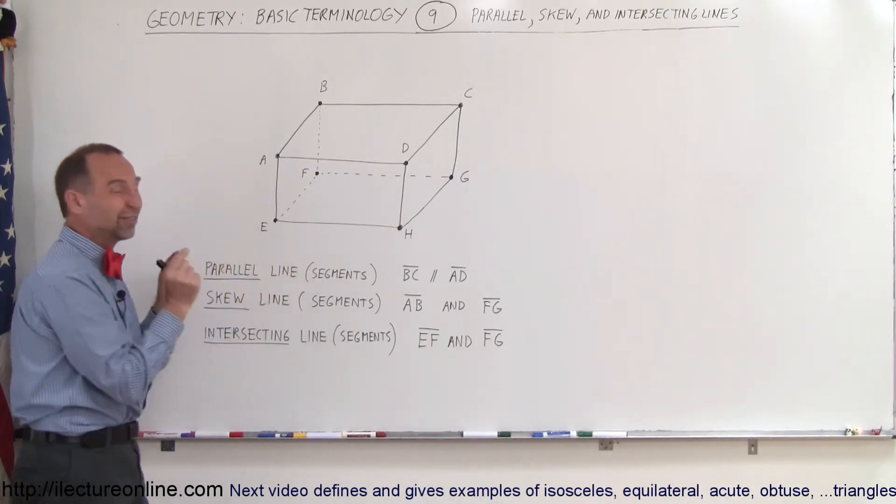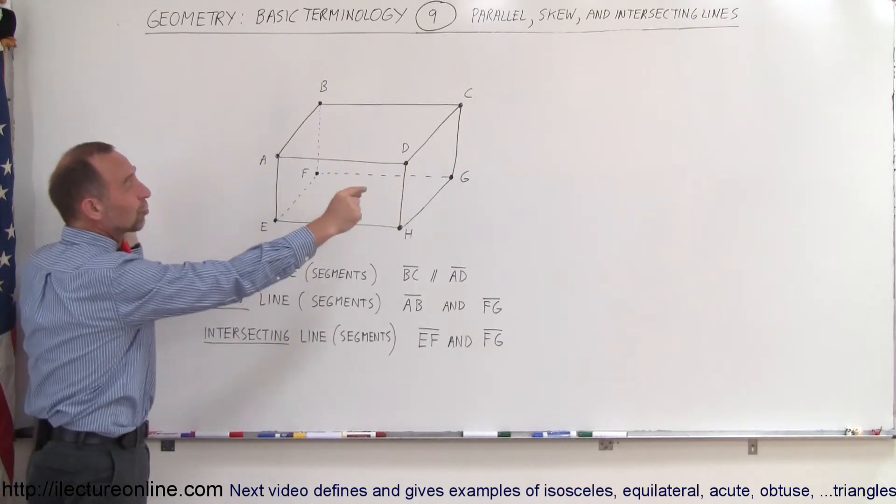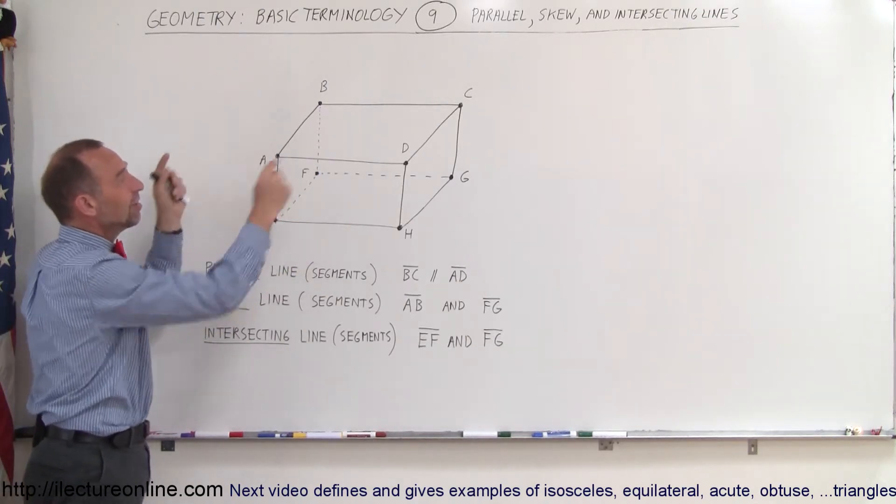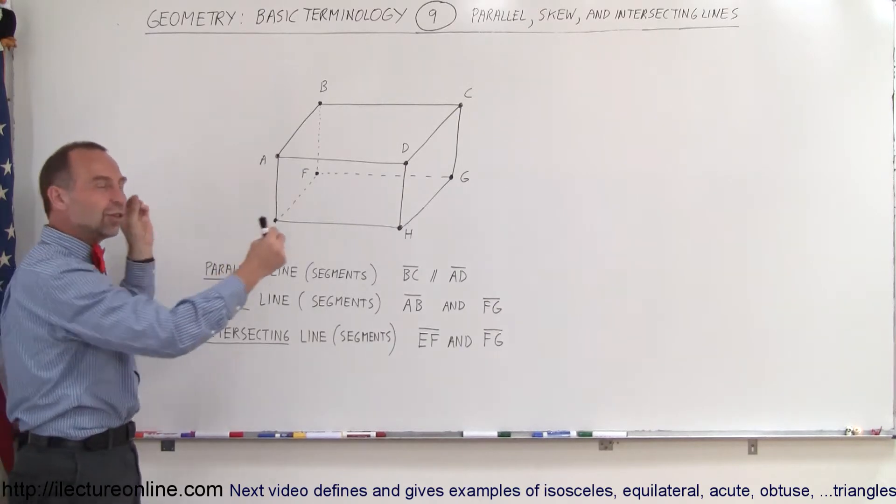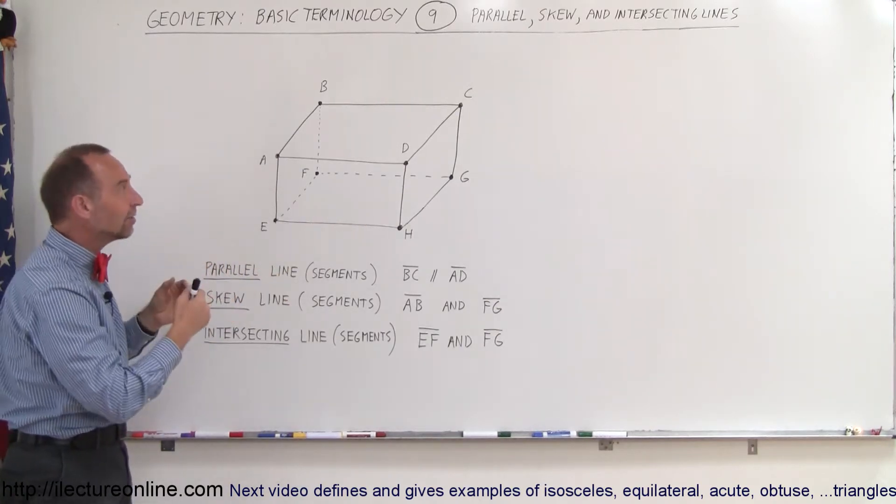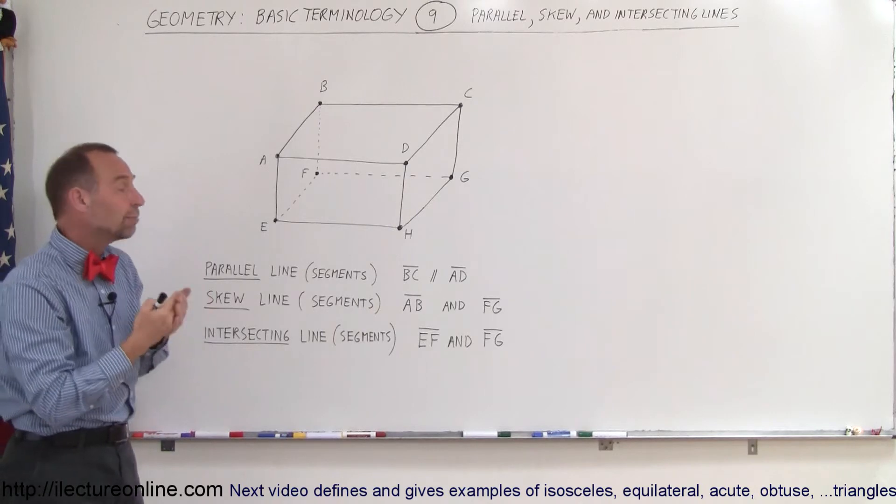These are parallel line segments because we don't have arrows drawn past the points A, D and B, C. So these are really line segments. But if you imagine they continue on forever, they would be considered lines, and those lines would be parallel.